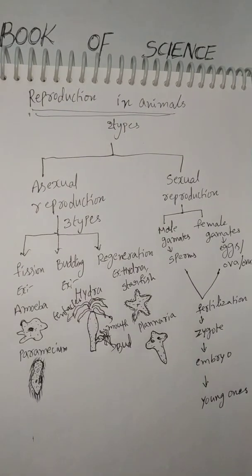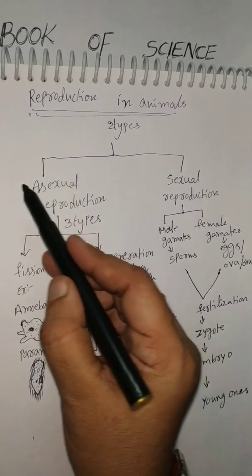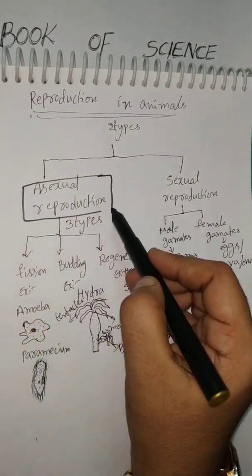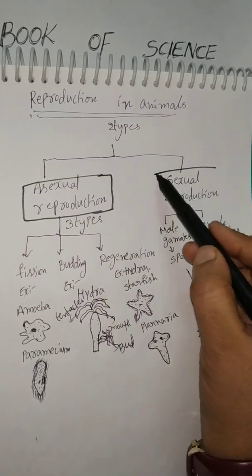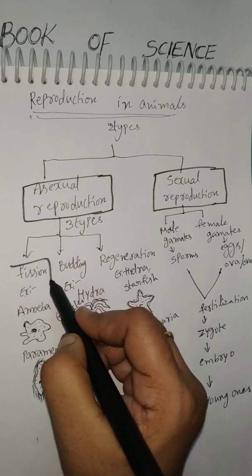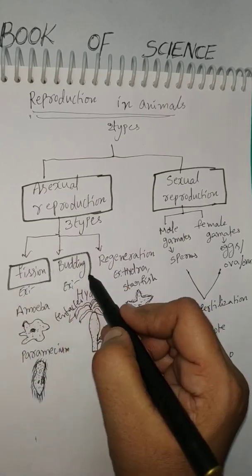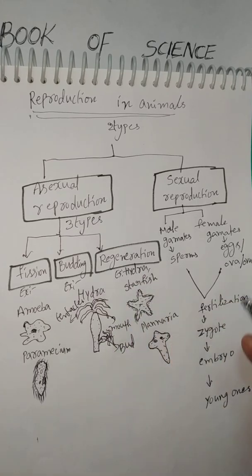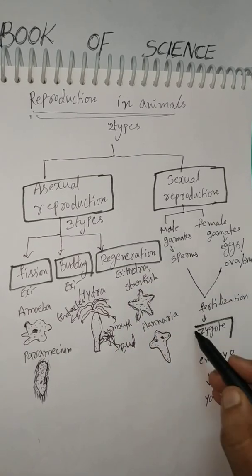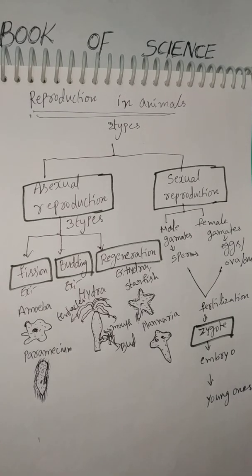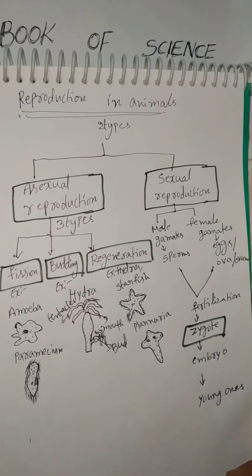This is the mind map of Reproduction in Animals. We can use sketch pens for fission, budding, and regeneration. So this is the overall mind map of Reproduction in Animals.